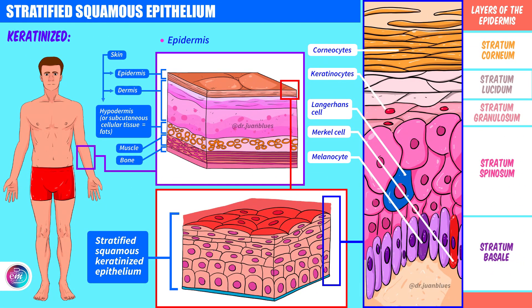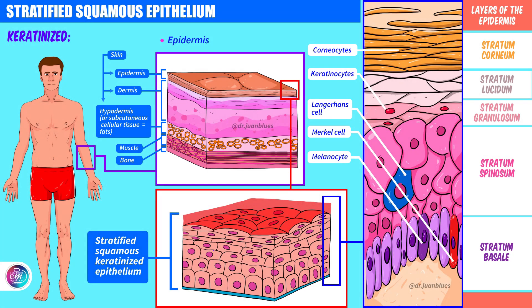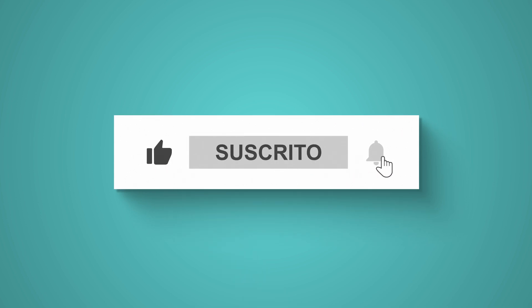Now we turn our attention to the epithelial tissues that are actually made up of several layers or cell strata — the stratified epithelia. But since this is getting a bit long and I don't want to exhaust you, we'll leave it until the next video. Looking forward to seeing you in the next chapter, Epithelial Tissue Part 3. Goodbye for now.